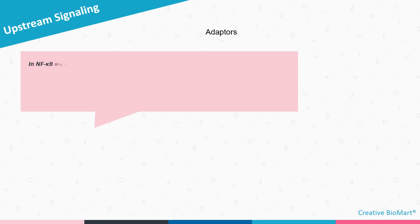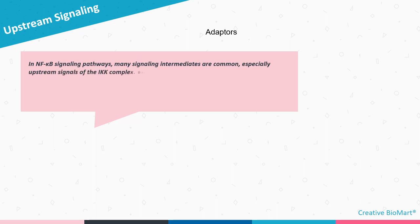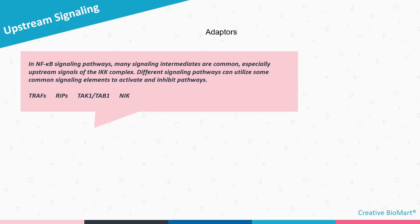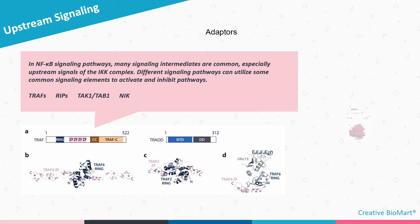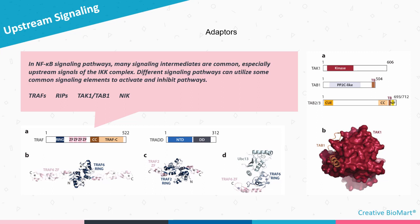In NF-Kappa-B signaling pathways, many signaling intermediates are common, especially upstream signals of the IKK complex. Different signaling pathways can utilize common signaling elements to activate and inhibit pathways. Upstream signal adapter proteins of the IKK complex include TNF receptor-associated factors (TRAFs) and receptor-interacting proteins (RIPs). The kinases of the IKK complex include TGF-beta activating kinase-1 (TAK-1) and NF-Kappa-B inducing kinase (NIK). In the non-canonical pathway, TRAF and NIK can fully activate IKK-alpha without NEMO. In the canonical pathway, TRAF, RIP, and TAK-1 are all required.